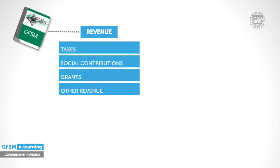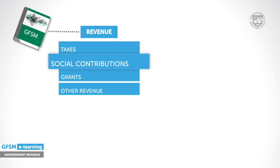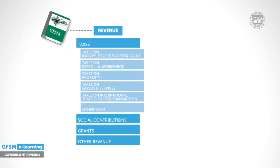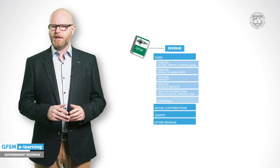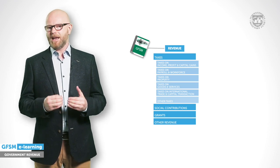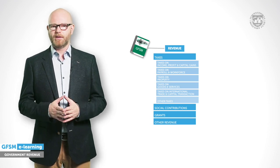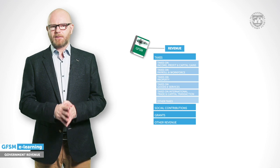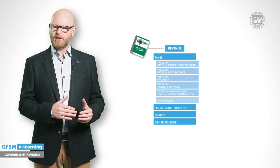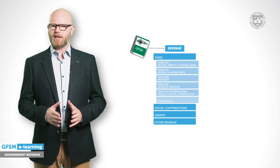There are four main groups of revenue: taxes, social contributions, grants and other revenue. Taxes are compulsory, unrequited amounts receivable from institutional units. Taxes are subdivided into six main groups and a number of subgroups, allowing for very detailed analysis and comparisons. GFSM provides guidance on classifying individual taxes based on what the tax is levied on — the tax base. Examples include distinguishing taxes from licences and explaining taxes on income, property, goods and services, and international trade.